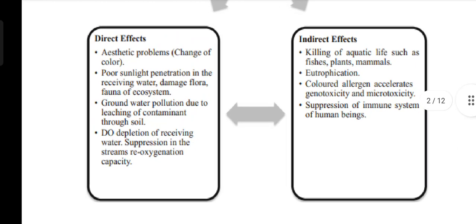In the direct effects: aesthetic problems, change of color, poor sunlight penetration in the receiving water, damage to flora and fauna of the ecosystem. Flora is related to plants and fauna is related to animals. Ground water pollution occurs due to the leaching of contaminants through soil. DO, which stands for dissolved oxygen, depletion of receiving water, and suppression of the stream's re-oxygenation capacity.